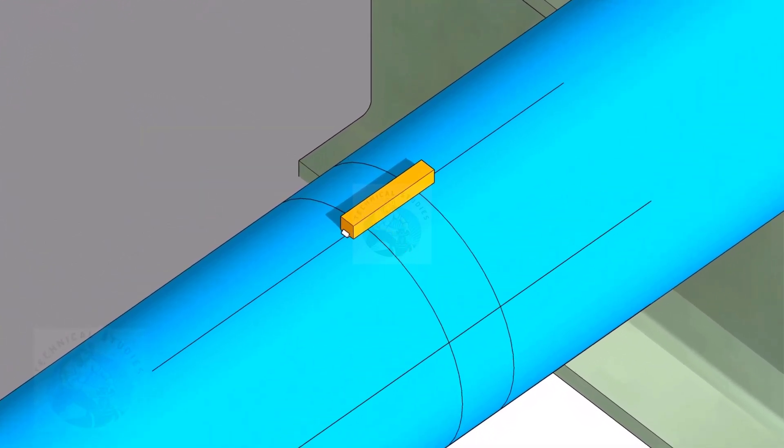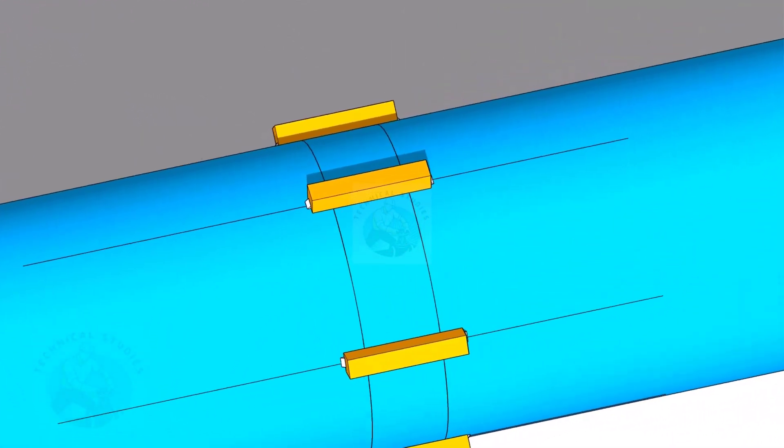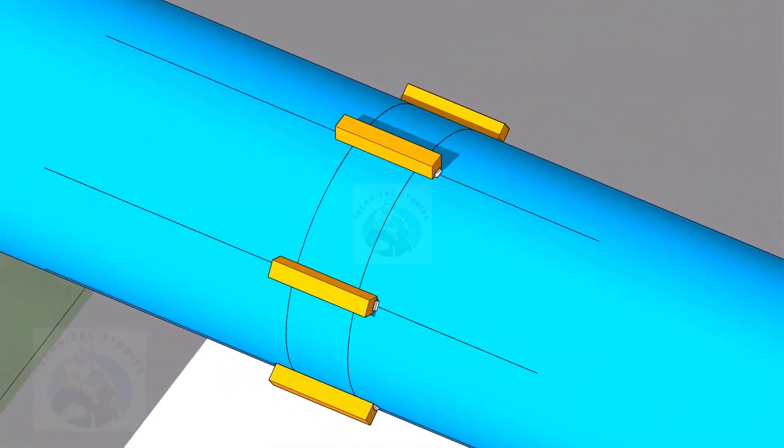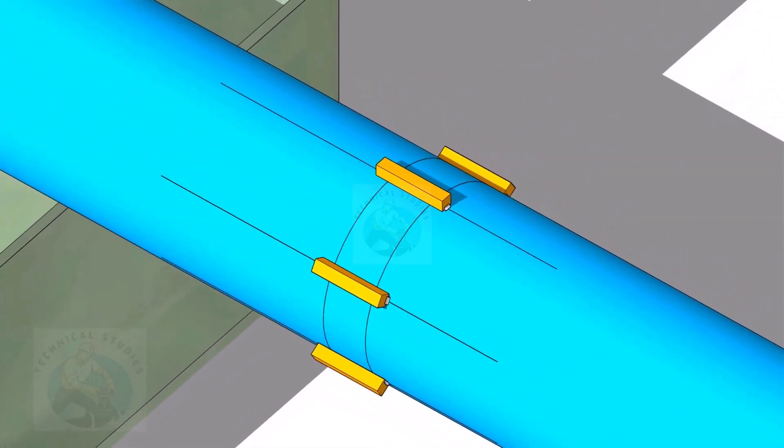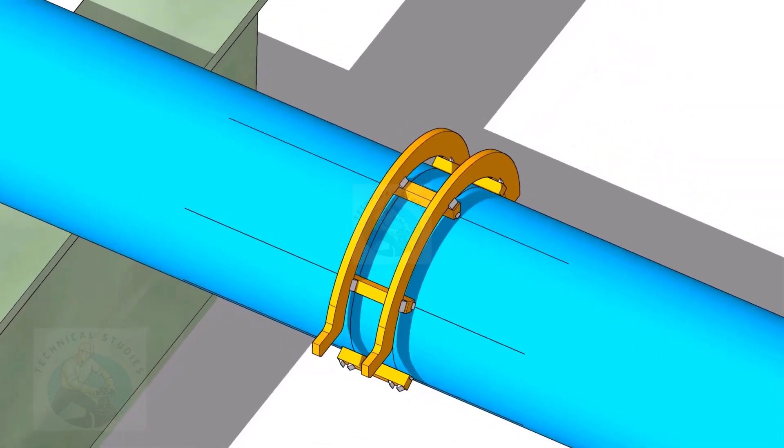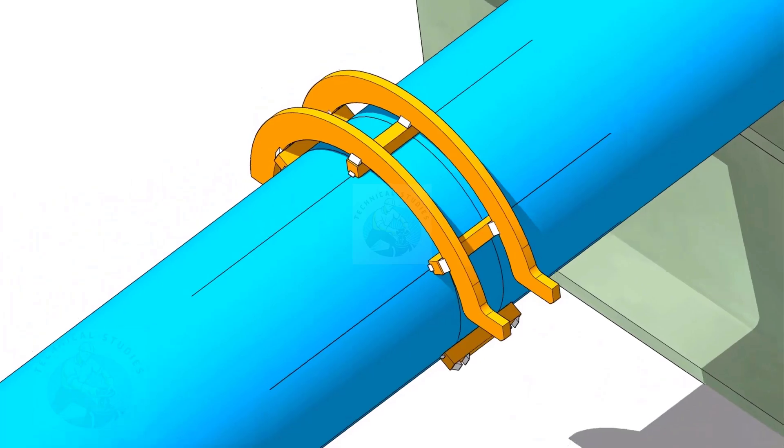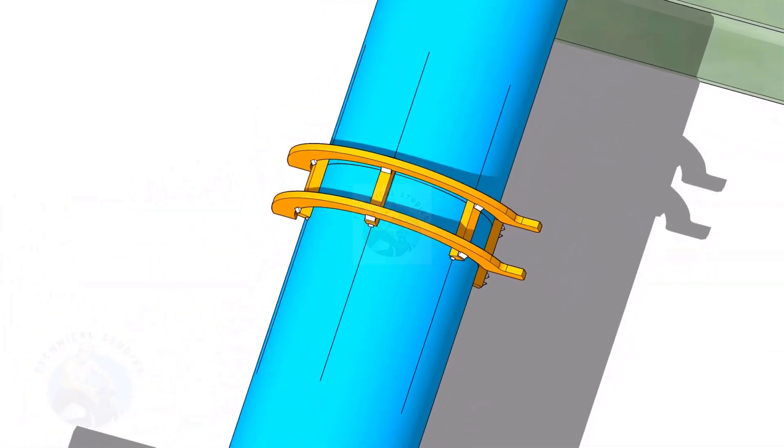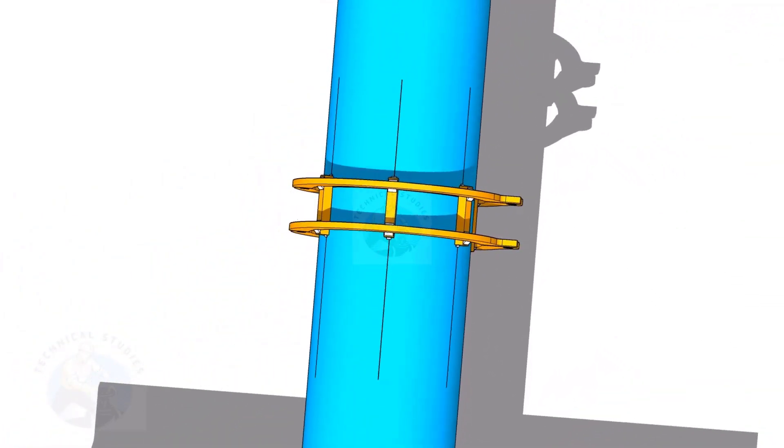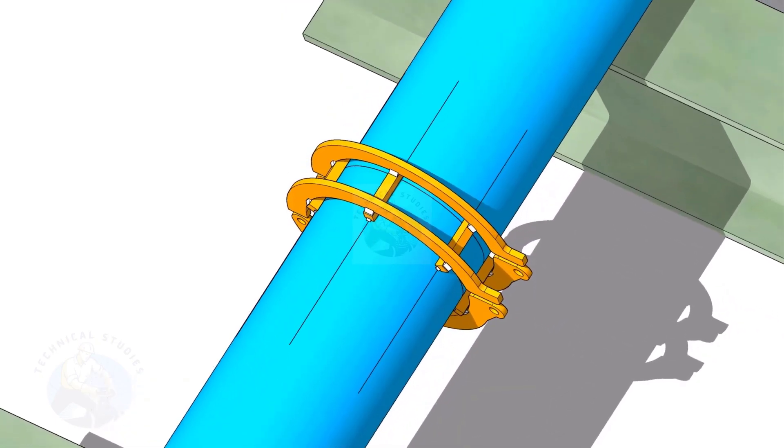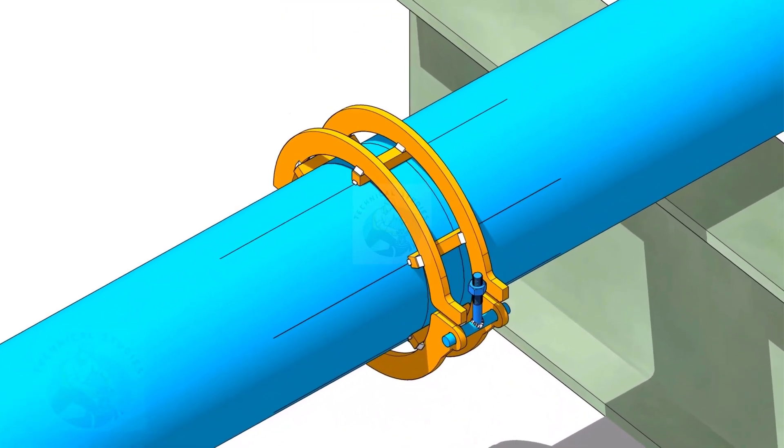Tack weld the square bars on the pipes as shown. Do not weld two big tacks. Tack weld the top half rings carefully on the square bars.